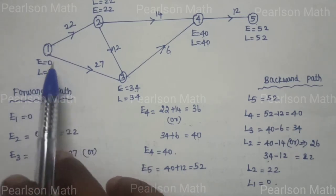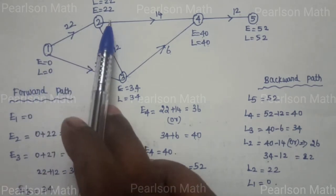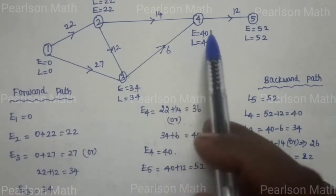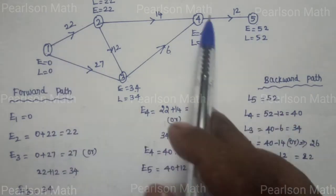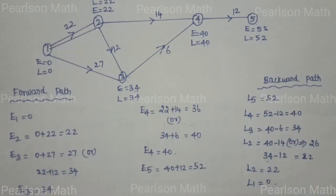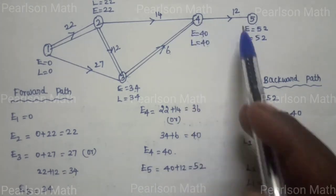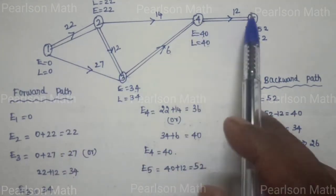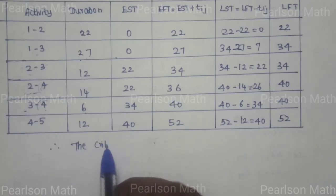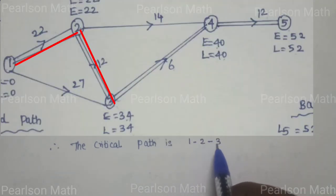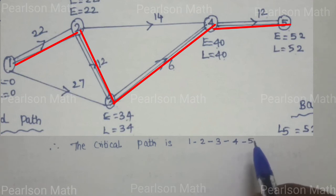The table values show the critical path where E value and L value are the same. If you join the critical path: 1 to 2, 2 to 3, 3 to 4, 4 to 5. So this path is the critical path. The critical path is 1-2, 2-3, 3-4, 4-5.